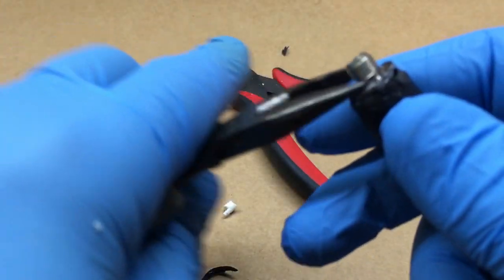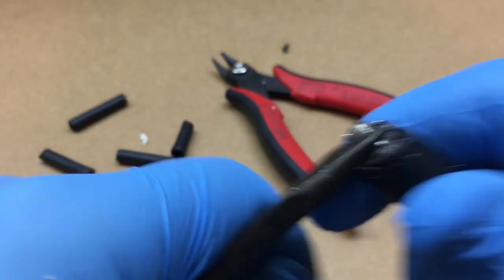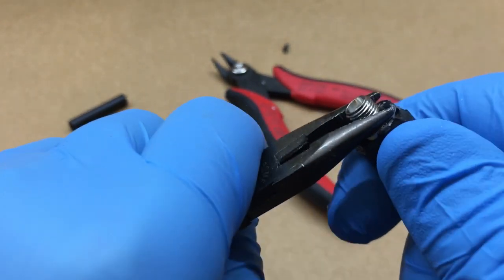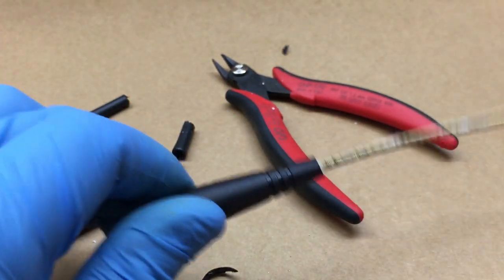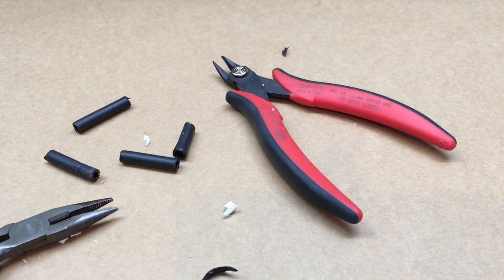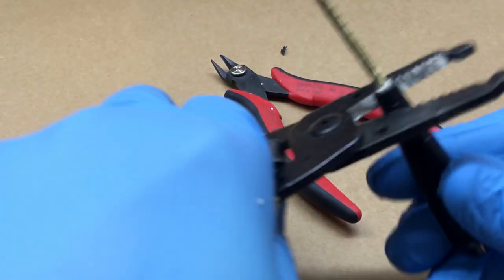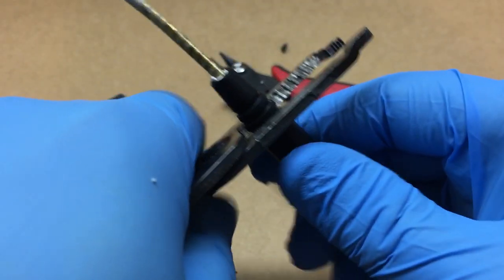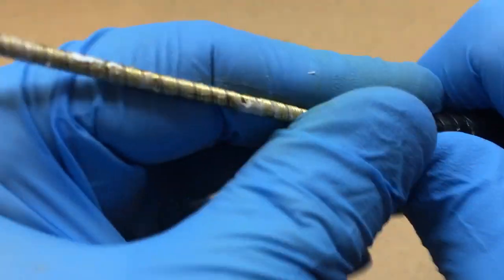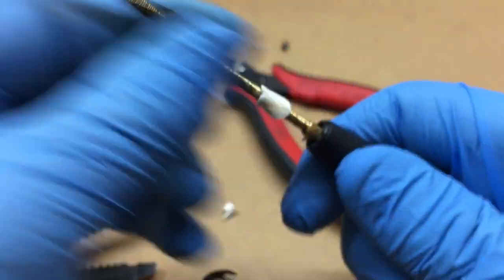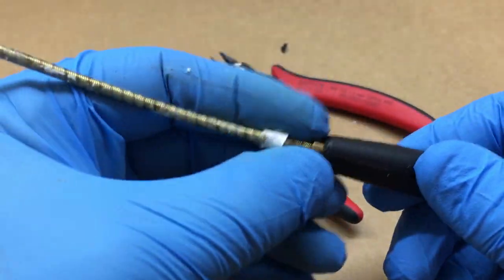Alright, so it looks to be maybe a little bit molded in there. I want to try to get this out one piece. Let's get my old dull wire strippers here and see if we can cut this again. There we go, without breaking anything. There's more of that silicone.